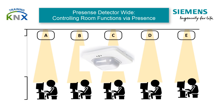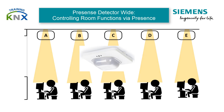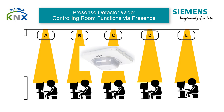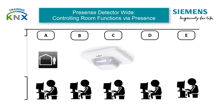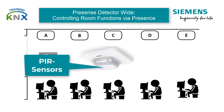Up to now, presence sensors have mostly only been used to switch lighting. However, more and more often now the control of room air conditioning is also included. The function of the presence detectors is based primarily on passive infrared sensors, which are present in all Siemens Presence Detectors White alike.